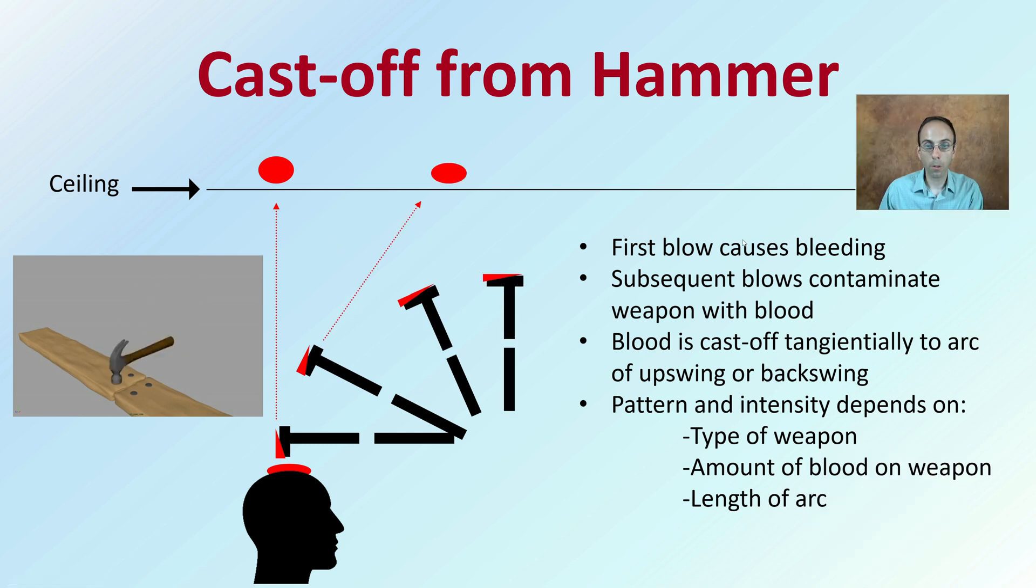First we have the first blow causing the bleeding. Subsequent blows contaminate the weapon with blood. The blood is cast-off tangentially to the arc of the upswing or backswing. Pattern and intensity depend on the type of weapon, the amount of blood on the weapon, and the length of the arc.